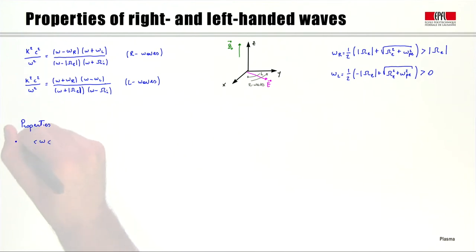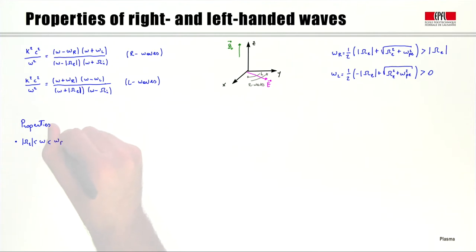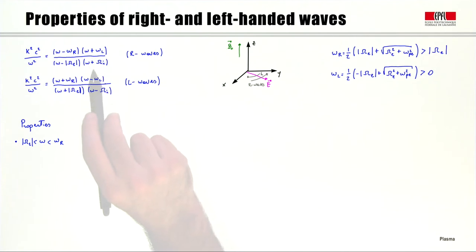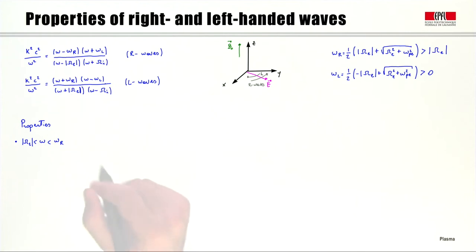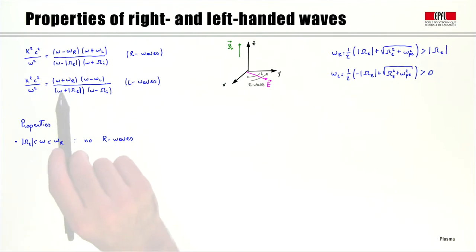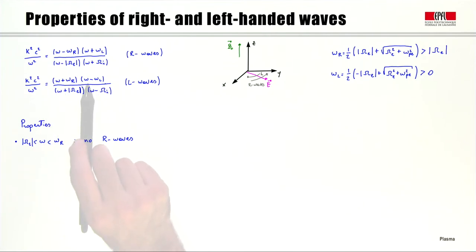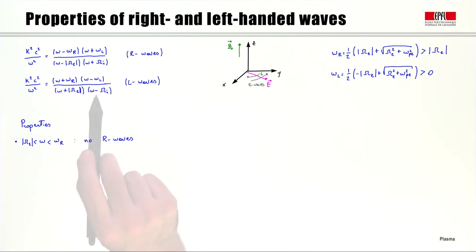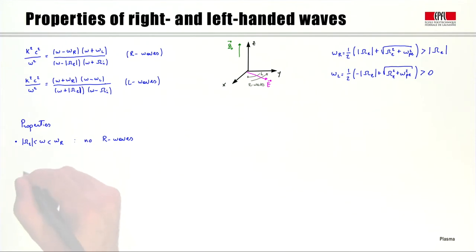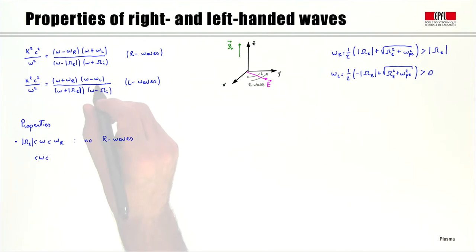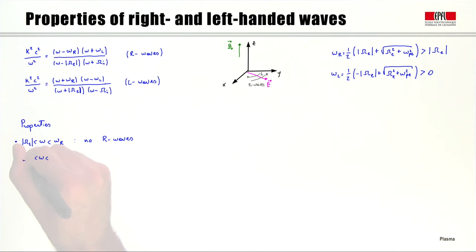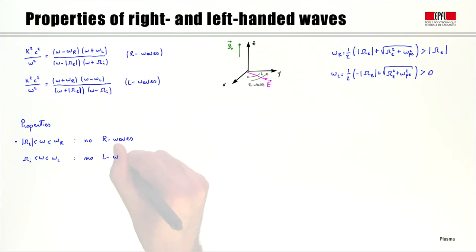If ω lies between the electron cyclotron frequency and ωr, then — since the other two factors are always positive — this factor becomes negative, and therefore there are no right-handed waves in that range. Similarly, for the left-handed waves, the only negative contributions can come from the relevant factors, and for frequencies between the ion cyclotron frequency and ωl, there are no left-handed waves.